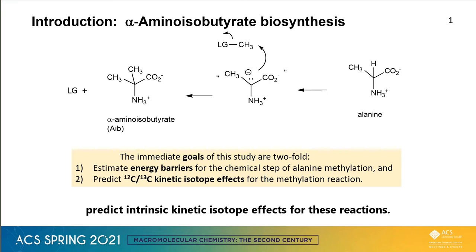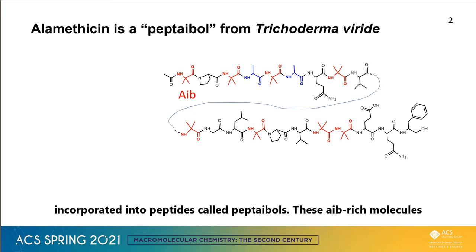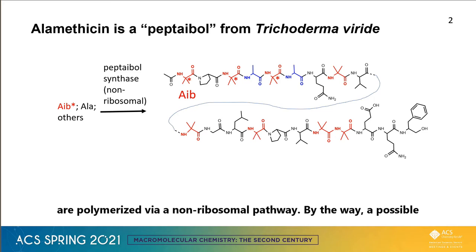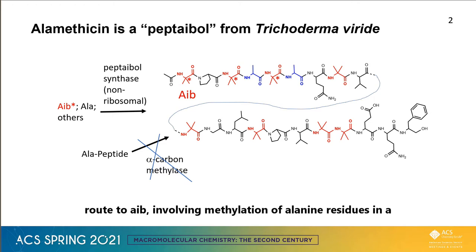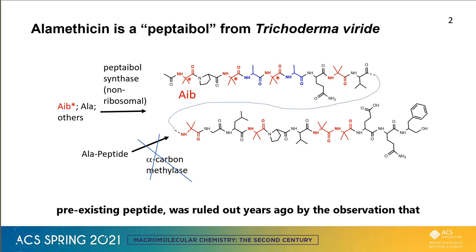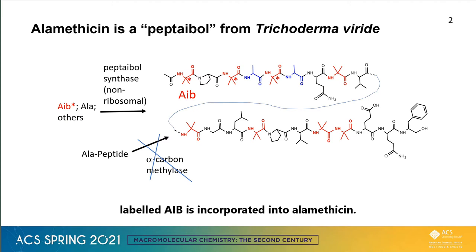AIB is biosynthesized in several families of fungi, where it is incorporated into peptides called peptaibols. These AIB-rich molecules are polymerized via a non-ribosomal pathway. By the way, a possible route to AIB involving methylation of alanine residues in a pre-existing peptide was ruled out years ago by the observation that labeled AIB is incorporated into allomethacin.